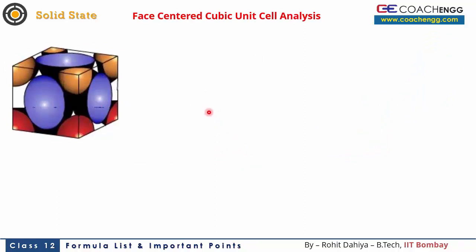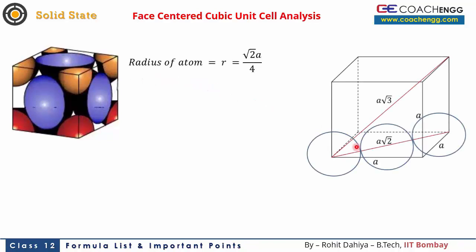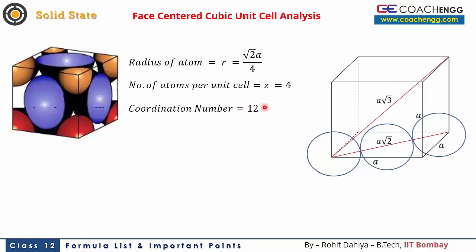For the face-centered unit cell (FCC), there are atoms at all 6 faces and 8 corners. The corner atoms contribute 1/8th and the face-center atoms contribute 1/2 each. Along the face diagonal, 3 atoms touch, giving r = (√2 × a) / 4. The number of atoms per unit cell is 4. The coordination number — nearest neighbors — is 12. The packing efficiency is the highest at 74%.